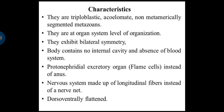Sense organs like eyespots and photoreceptors are present in the free-living forms. Fertilization is internal. The body is monoecious — that is, hermaphrodite — meaning both male and female reproductive organs are present in a single animal, forming a very complex reproductive system.